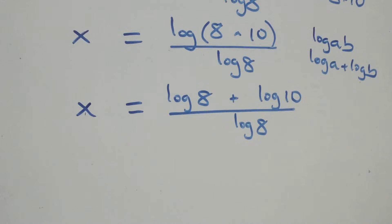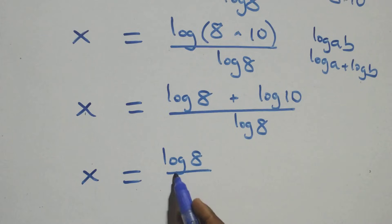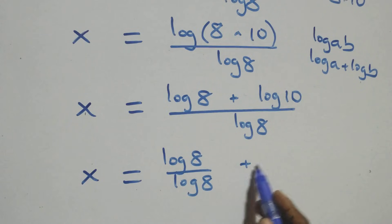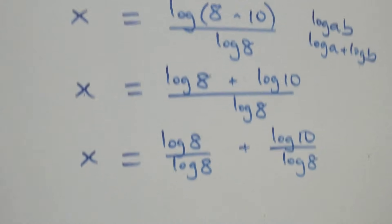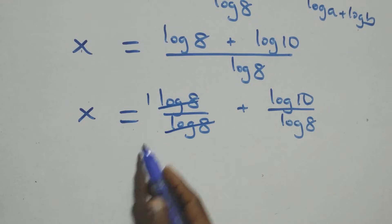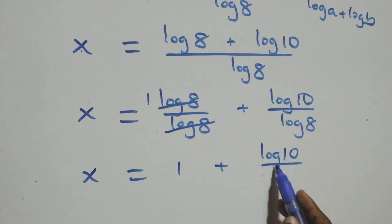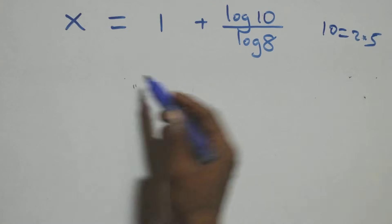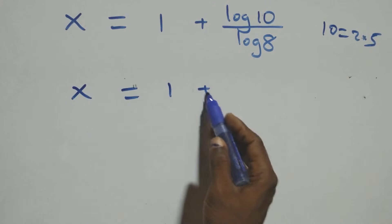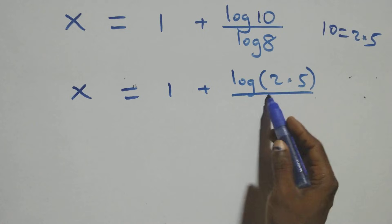We separate this into two fractions: x equals to log 8 over log 8, plus log 10 over log 8. Log 8 over log 8 simplifies to 1. We can also rewrite 10 as 2 times 5, so log 10 over log 8 becomes log(2 × 5) over log 8.